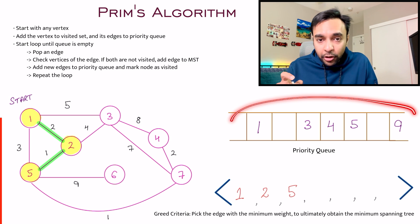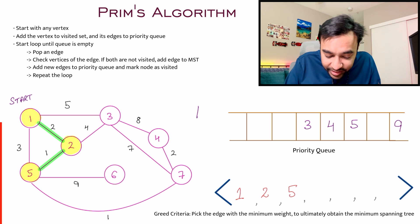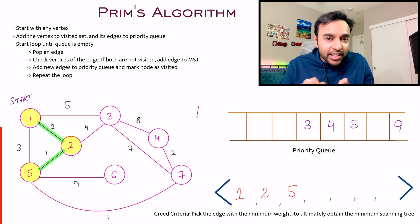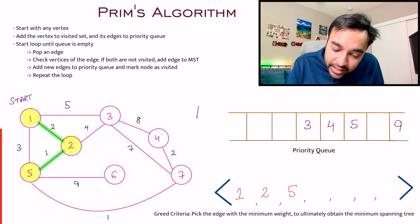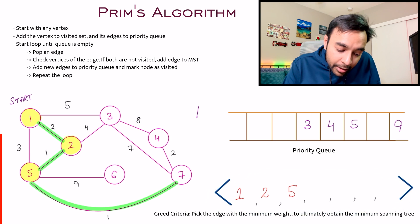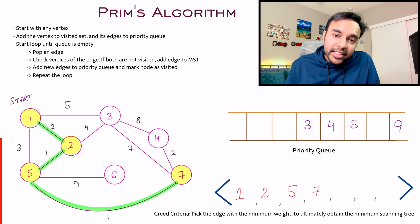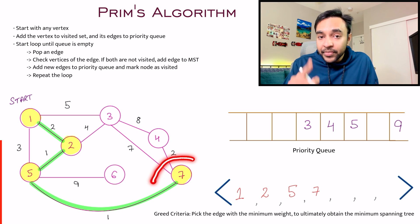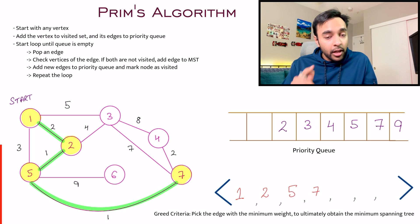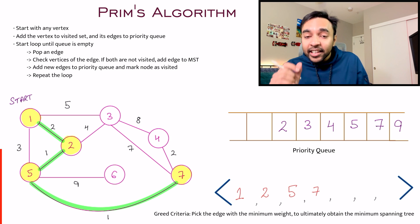Once again you look in your queue and pop the minimum edge — edge 1 again, but this time it is a different edge. You pick up this new edge, and it lands you at node number 7. You have not already visited node 7, so you can visit it. You visit node 7 and write it down in your set. Then node 7 gives you 2 new edges to work with: 7 and 2. You add both of these edges to your priority queue.